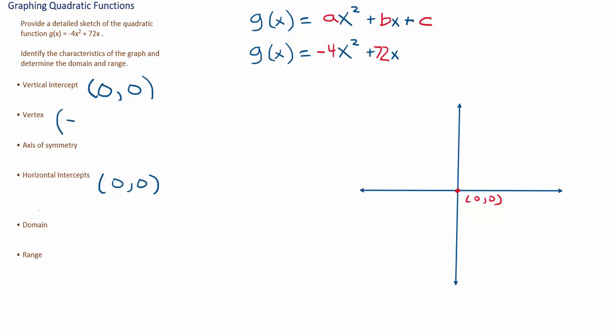The formula for the x value of the vertex of a parabola is negative b over 2a. For my function, the x value of the vertex would be negative 72, and this is because b is 72. The opposite of b would be negative 72. Then we are to divide by 2 times a, and a was negative 4 in our case. So this simplifies out to be negative 72 divided by negative 8. The negatives simplify out, and 8 goes into 72 nine times. So I get that the x value of the vertex is 9.